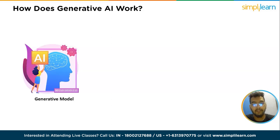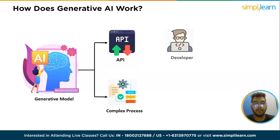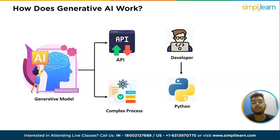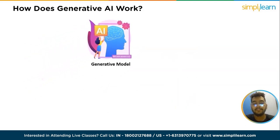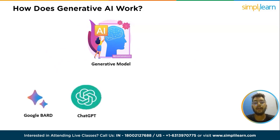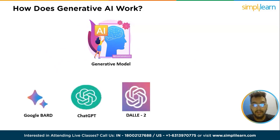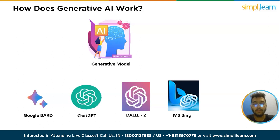In the early stages of generative AI, utilizing the technology involved submitting data through an API or a complex process. Developers needed to acquaint themselves with specialized tools and write applications using programming languages like Python. Some of the recent and fully operational generative AI systems are Google BARD, DALL-E, OpenAI ChatGPT, Microsoft Bing, and many more. Let's now discuss ChatGPT, DALL-E, and BARD, which are the most popular generative AI interfaces.